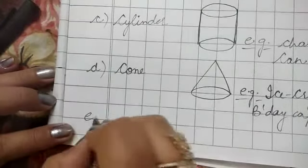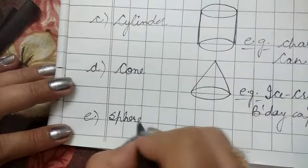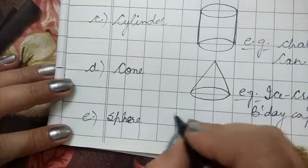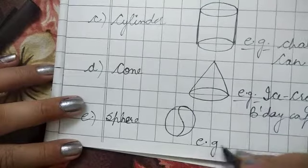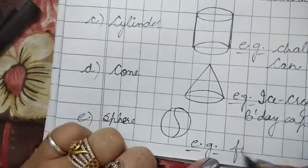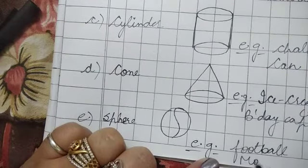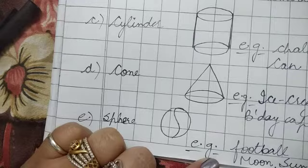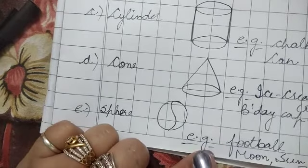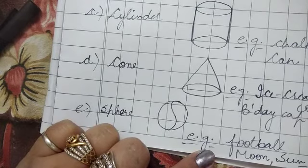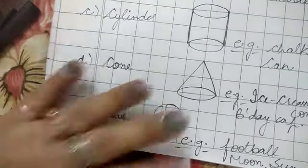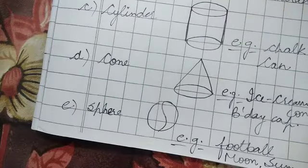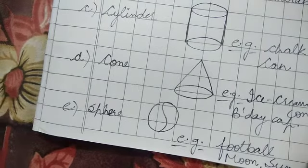Last one is sphere. For example, our football, moon, sun, et cetera. These are the examples of sphere. I hope you all understand the solid shapes or 3D shapes. First we discussed flat shapes. Thank you, have a great day.